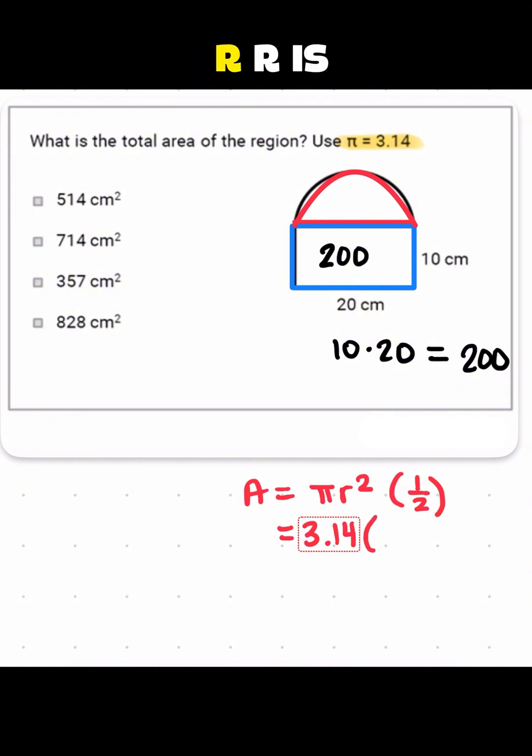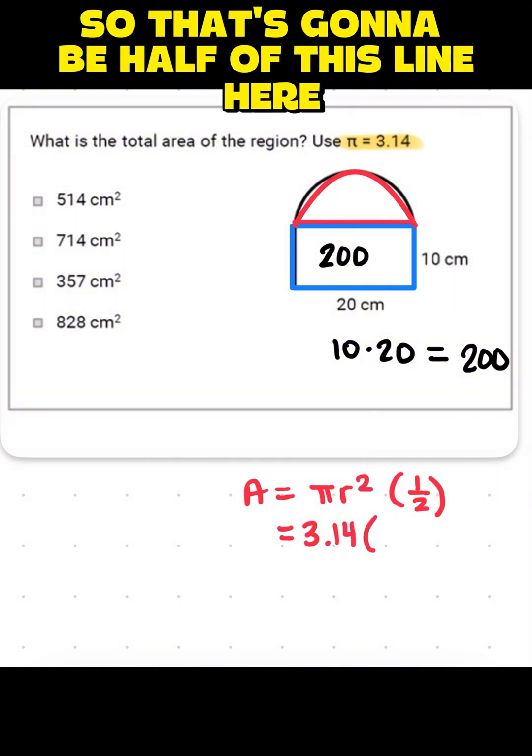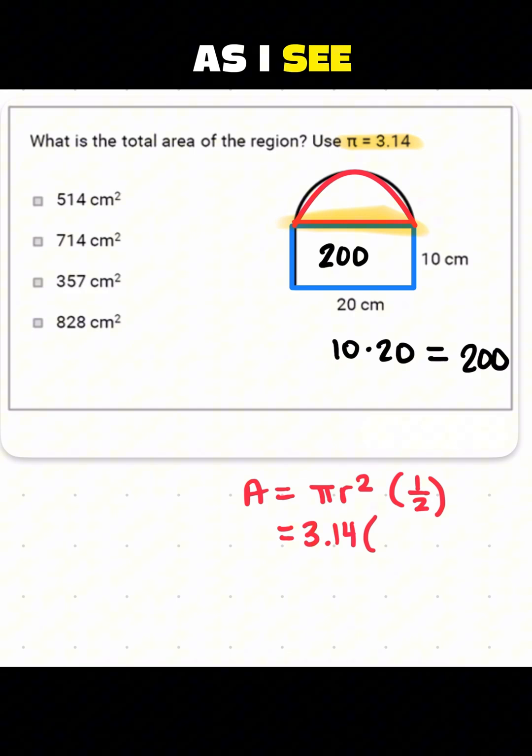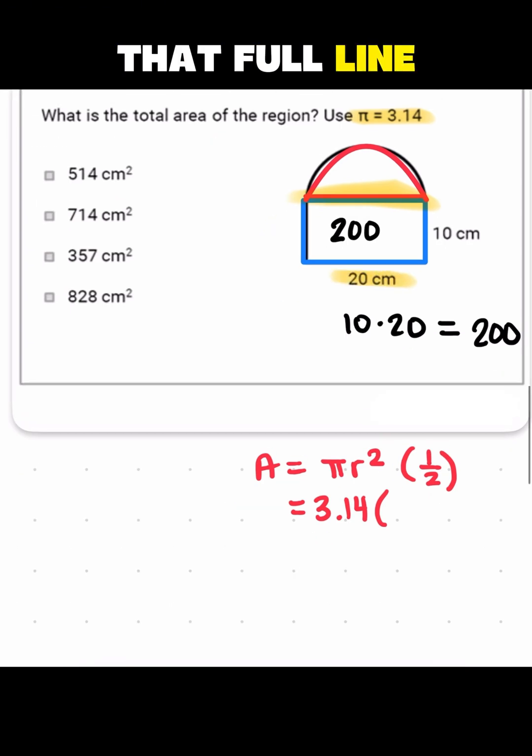Then I need r. R is the radius of the circle. So that's going to be half of this line here. That line would represent the diameter and half of the line would be the radius. So half of a diameter is a radius. That full line is 20 centimeters, as I see here at the bottom. Half of that line would be the radius. So the radius is 10.